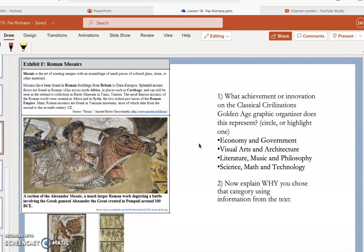Mosaics have been found in Roman dwellings from Britain to Dura Europas. Splendid mosaic floors are found in Roman villas across North Africa in places such as Carthage and can still be seen in the extensive collection in Bardo Museum in Tunis, Tunisia.